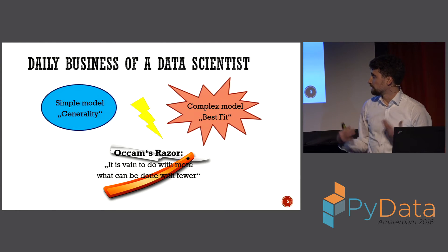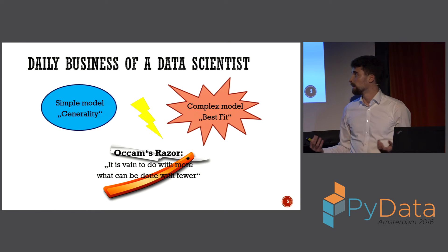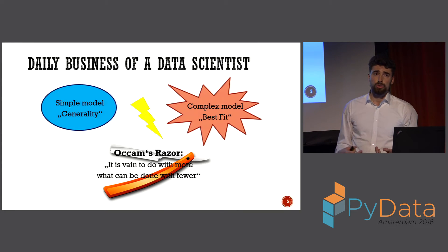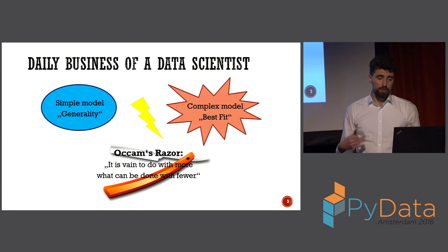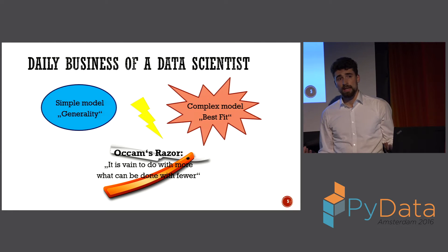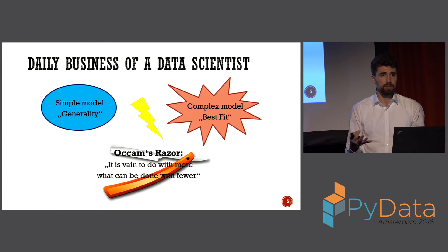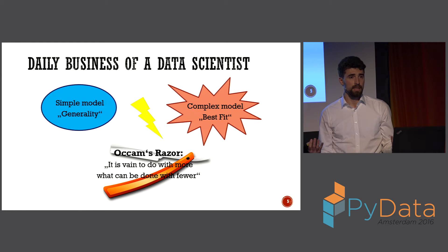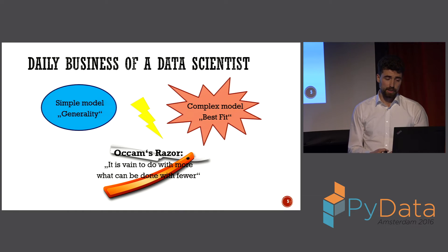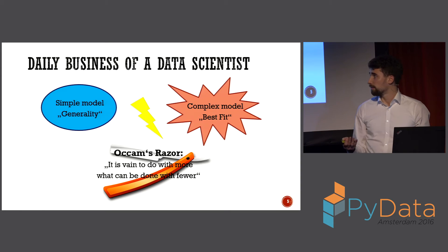Here I want to go down the Bayesian route to show you how you can do this in a Bayesian way. The basic intuition behind this is Occam's razor. The quote is: 'It is vain to do with more what can be done with fewer.' Meaning if we have two models that both equally well describe a dataset, we would always opt for the easier model. But most of the time we're not in that situation, so we have to find a way of balancing.